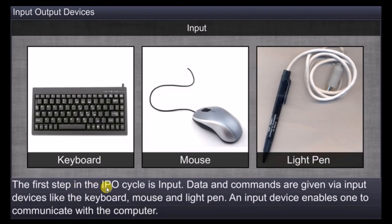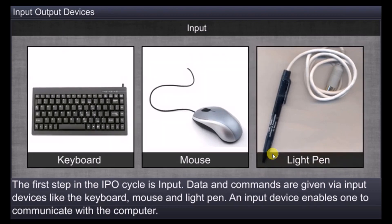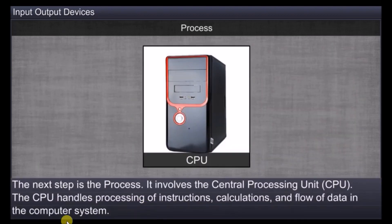The first step of the Input-Process-Output cycle is input, where data and commands are entered through a keyboard. The second step is the process, which involves the central processing unit. The CPU handles the processing of instructions, calculations, and the flow of data.